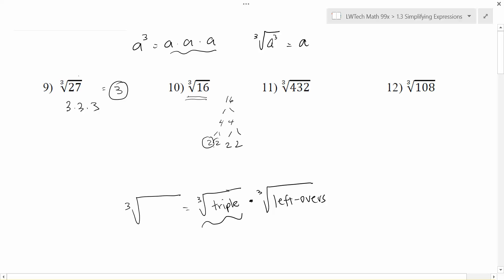So let's see how that would work here. In this case, I have a group of 3 twos. So when I break this cube root of 16 down, I can break it down into the cube root of 8, which is 2 times 2 times 2. And then I have one leftover 2 that wasn't able to be part of that group.